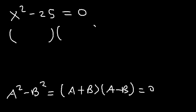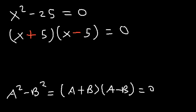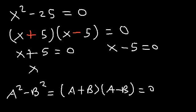So we're going to do the same thing here. The square root of x squared is x. The square root of 25 is 5. One will be positive, and the other will be negative. So that's how you can factor x squared minus 25 using the difference of perfect squares technique. Now, set each factor equal to 0 and then solve for x. The first one gives x is negative 5, and for the second one, it's 5.